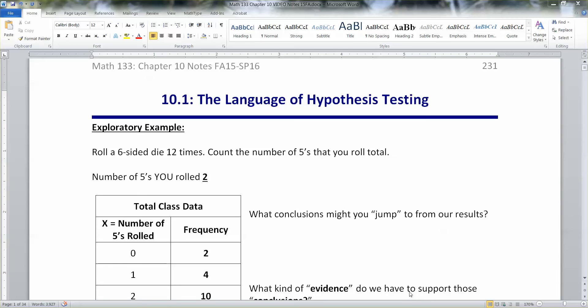Let's begin with an exploratory example that if you're in a face-to-face class, I actually have you do in class. So every student has a six-sided die and they're going to roll it 12 times. The idea is to count how many fives they got when they rolled that. For example, I did it myself and when I did it, I rolled and I got two fives out of the 12.